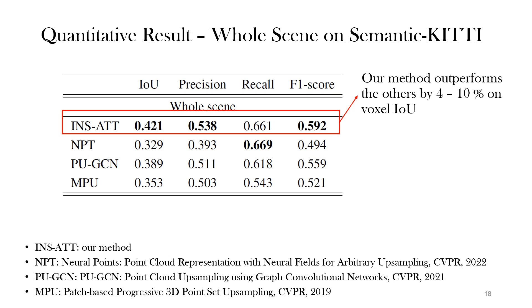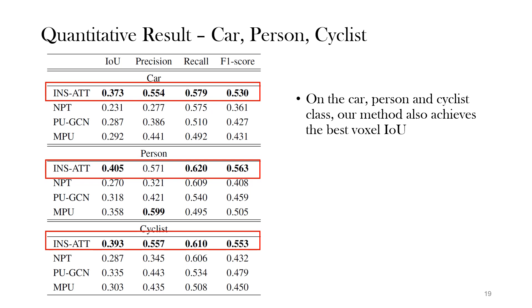Next, we conduct extensive experiments to demonstrate the effectiveness of our method. First, we compare the voxel IOU of the whole scene with existing methods on SemanticKITTI. Our results achieve significant improvement with a 4 to 10% gain. To check the reconstruction of detail, we also test voxel IOU on cars, persons, and cyclists, where our method still achieves the best voxel IOU.